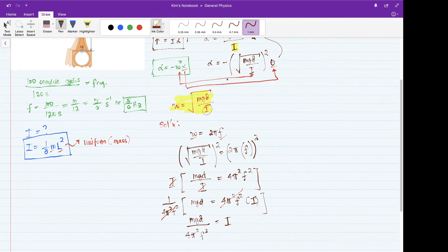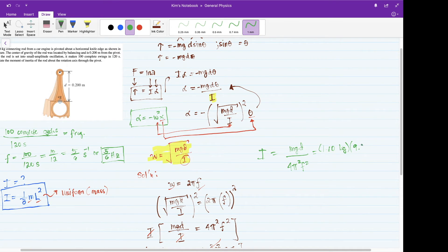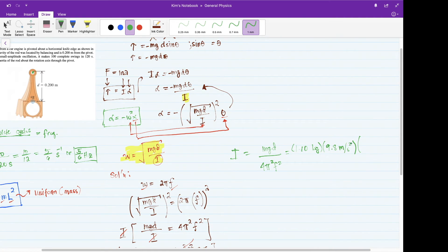Let's try to substitute or plug in the values. I have I equals MgD all over 4 pi squared frequency squared. The M stands for the mass, which is given to be 1.80 kilograms. The G, since we are on Earth, that is the acceleration due to gravity at 9.8 meters per second squared. For the D, it is actually the distance from the pivot point to the center of gravity, so that is 0.200 meters. You divide everything by 4 pi squared, and then the frequency is 5 over 6 second squared.